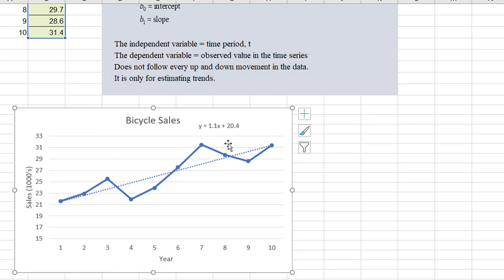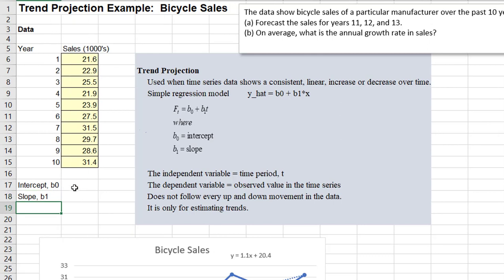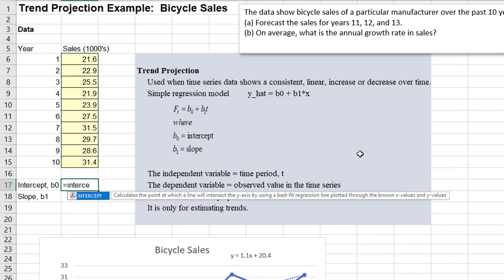So it looks like the intercept is 20.4 and the slope is 1.1. Now the second way, the intercept and the slope functions. I'm going to put some labels here, intercept, and then I already see it appearing here.